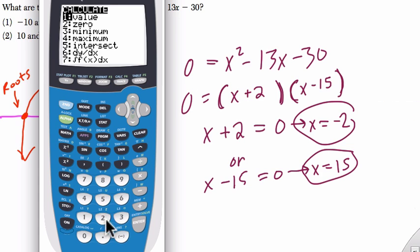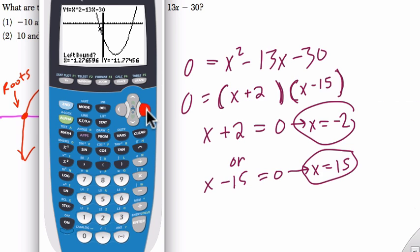Second trace. Choice 2 for zeros or roots. We go to the left of our point and the right of our point. We'll get as close as possible here. Sorry, it's not going. Sometimes the calculator program is a little bit laggy and frustrating.